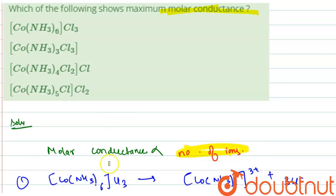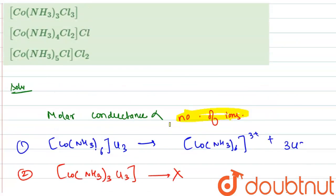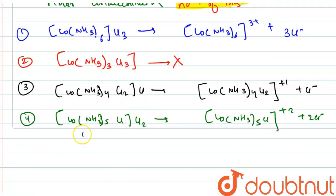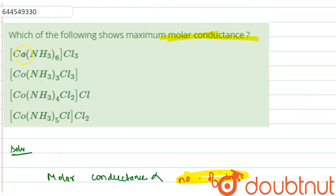In the first option, the total number of ions is four, which is the maximum when compared to the other given options. So option one is the correct answer.